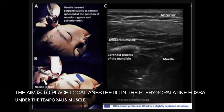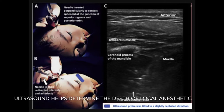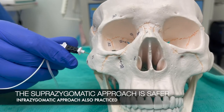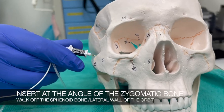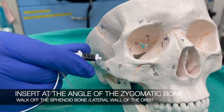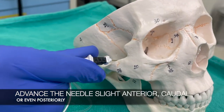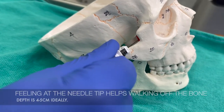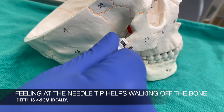In this nerve block, local anesthetic is placed in the pterygopalatine fossa. Ultrasound helps determine the depth of local anesthetic. The block needle is rarely seen in this out-of-plane ultrasound technique. The suprazygomatic approach is a safe technique. Insert the block needle at the angle of the zygomatic bone, walk off the sphenoid bone, and advance the needle slightly anterior and caudal. The needle tip can be advanced to four to five centimeters.